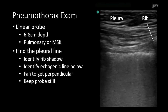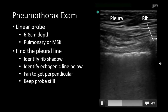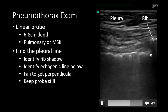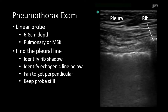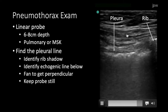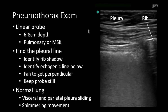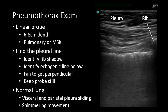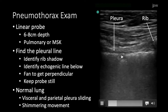The first step is to find the pleural line. I recommend identifying the rib, which will cause a shadow. Below the rib will be a bright white line — that's your pleura. You may need to fan to get perpendicular to it to bring it out. Then keep the probe nice and still so we can investigate whether there's lung sliding. Normally the visceral and parietal pleura slide against each other, and that movement can be seen as a shimmering — some people call it ants marching.